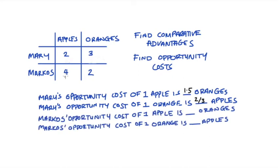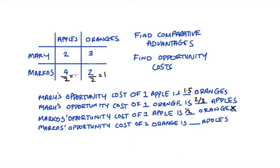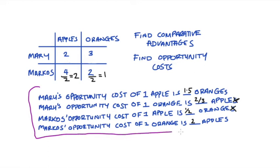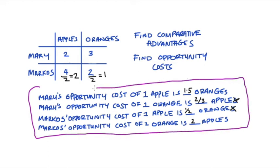For Marcos, he can either make four apples at most or two oranges. Dividing both sides by four, we see that for every one apple he produces he gives up half an orange. Switching sides, for every one orange Marcos gives up two apples. If you're confused by what I just did, I have another video on finding opportunity costs that goes through this process in a slower fashion — I'll link to it below.